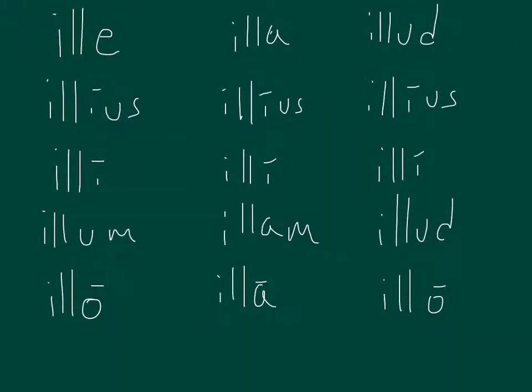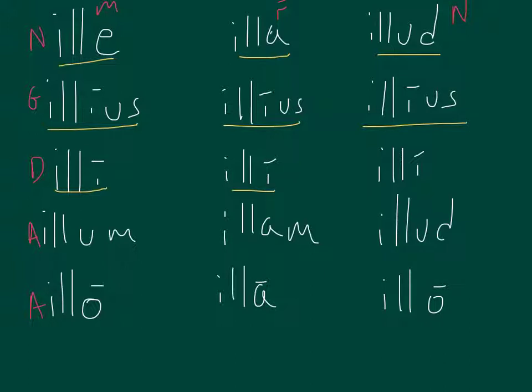So, once again, we have masculine, feminine, neuter, nom, gen, dat, ac, ab. Repeat after me. Ille, illa, illud. Illius, illius, illius. Illi, illi, illi. Illum, illam, illud. Illo, illa, illo.